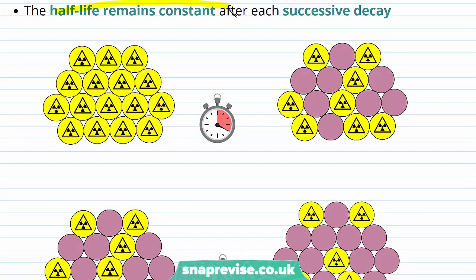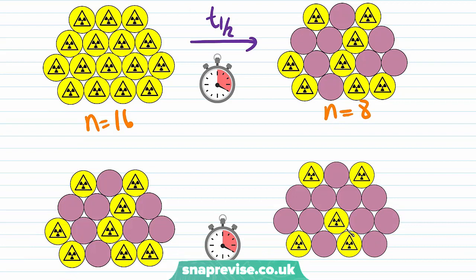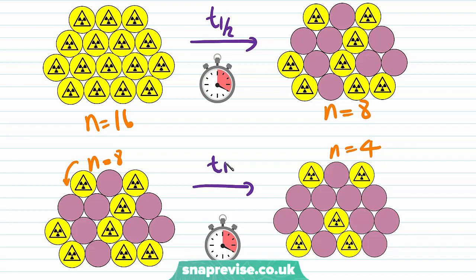The half-life remains constant after each successive decay. So if we start with n equals 16 nuclei and a half-life of time goes by, we end up with 8 nuclei. And if we start with 8 nuclei, the time taken for the number of radioactive nuclei to halve is going to be exactly the same as it was before — so the half-life hasn't changed.